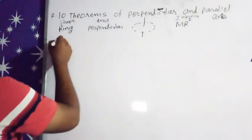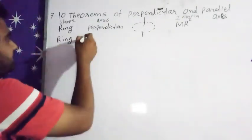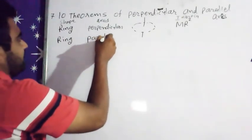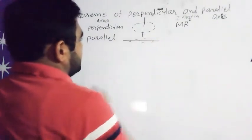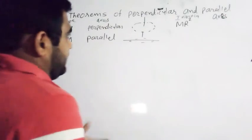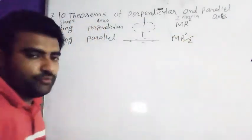Now again, ring which has radius R, but now axis is parallel. So axis is now passing through diametrical point, and then inertia will be MR square by 2.